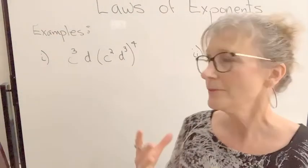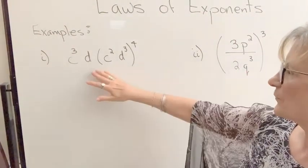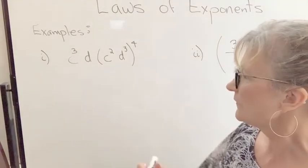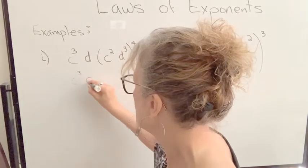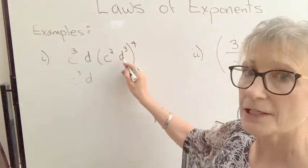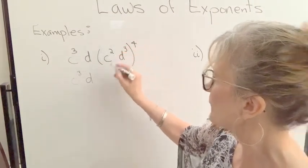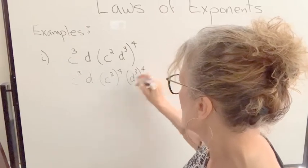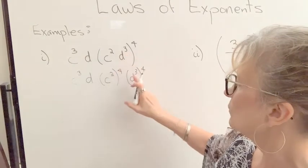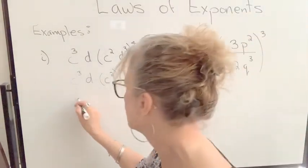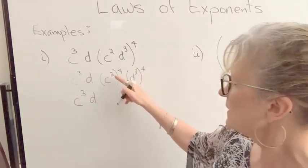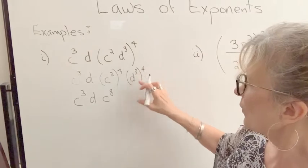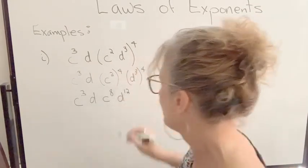Let's try some examples where we're combining more than one rule and we'll start with this first one. So it looks like a lot going on but what we're going to do is we're going to deal with brackets first and we're just going to leave this c cubed d there and what I can do here, remember when I have a product and it's raised to an exponent, I can apply that exponent to each factor. So I'm just going to do it step by step. So I took the c squared and raised it to the power of 4, I took the d cubed and I raised it to the power of 4. Now I'm going to simplify those. So c squared to the power of 4, remember I multiply.